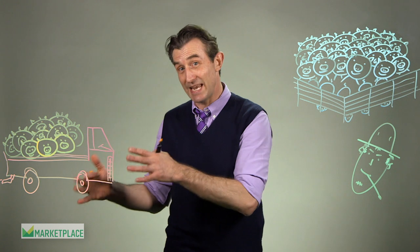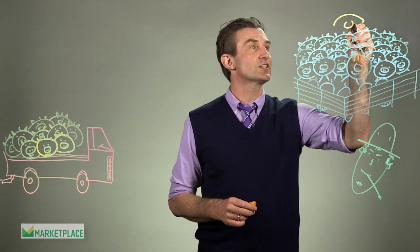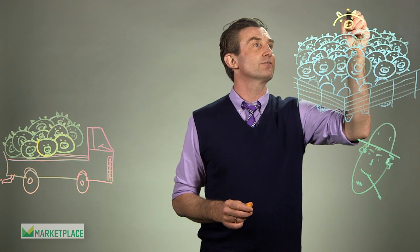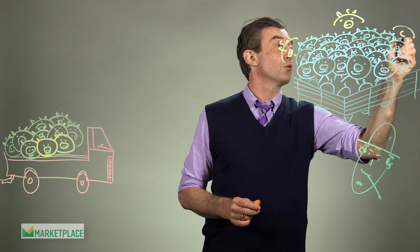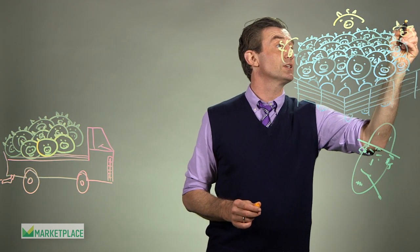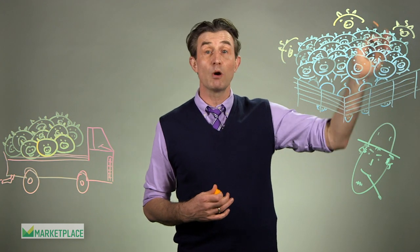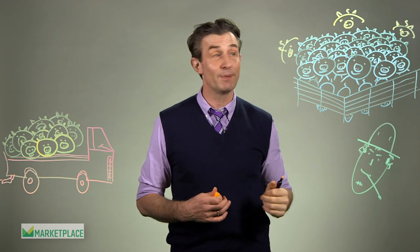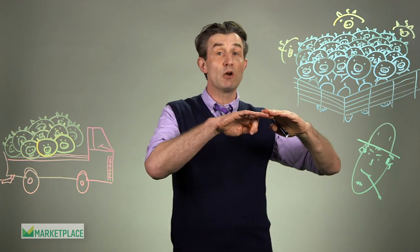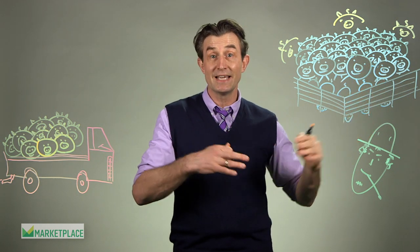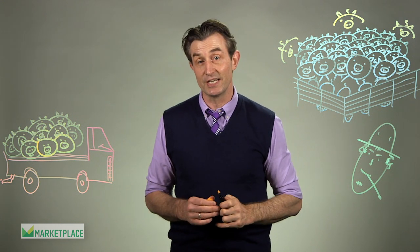Unfortunately, these 10 pigs have not been vaccinated, and vaccine is very expensive, so rather than spending the money the farmer decides to effectively inoculate these pigs using something called herd immunity. This means he spreads them throughout the herd, so if one catches the disease it probably won't spread to the rest of the unvaccinated pigs because they're all spread out and unlikely to bump into each other. In other words, if the overwhelming majority of the herd is vaccinated against a disease, it effectively provides immunity to the unvaccinated.